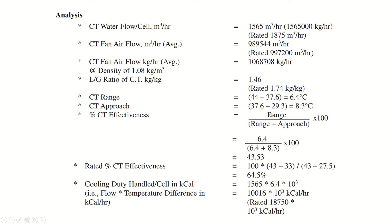We can calculate the effectiveness of the cooling tower using the formula: range divided by (range plus approach), multiplied by 100. The effectiveness of the cooling tower is 43.53%.